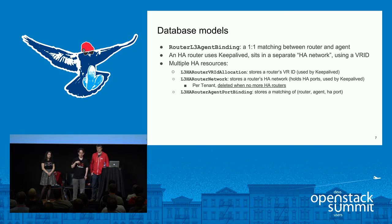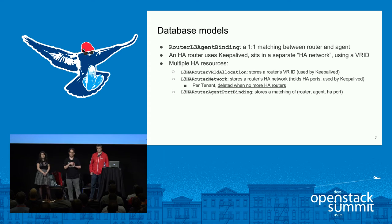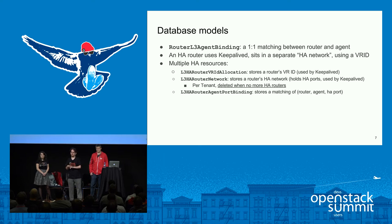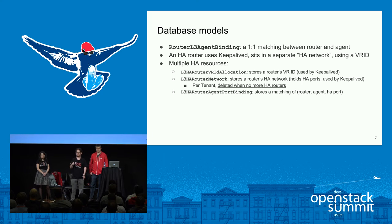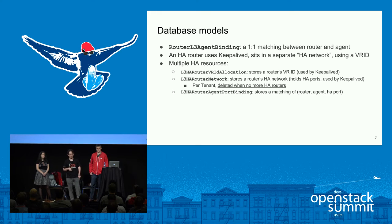On the database layer, this requires a lot more resources. The first resource is the router L3 agent binding - a one-to-one matching between a router and an agent. On the non-HA case, we have a single binding. On HA, we have one for each agent the router is scheduled to. On top of that, KeepaliveD uses different VR IDs, so we have the L3HA router VR ID allocation, which means this is the VR ID for this router. We also have the L3HA router network, which comes in addition to the normal network in the neutron database.